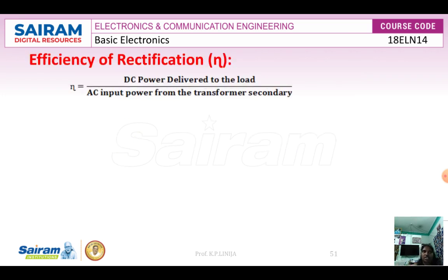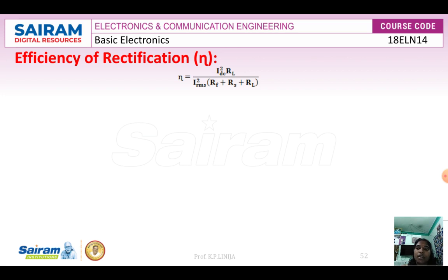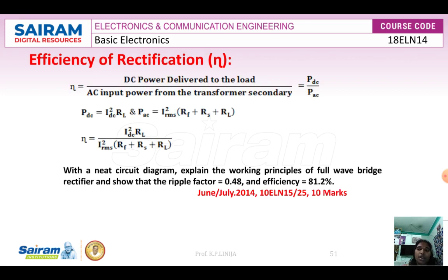Next is efficiency, a very important factor in rectification. Efficiency eta equals DC power delivered to the load divided by AC input power from the transformer secondary, that is PDC divided by PAC. We know PDC equals I²DC × RL and PAC equals I²RMS × (RF + RS + RL). So eta equals I²DC × RL divided by I²RMS × (RF + RS + RL).